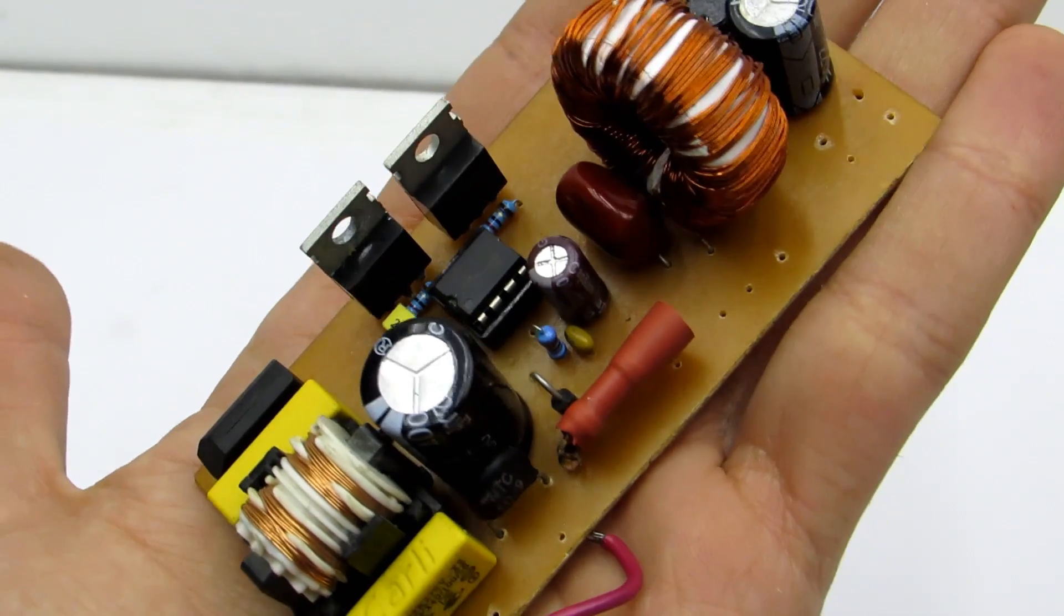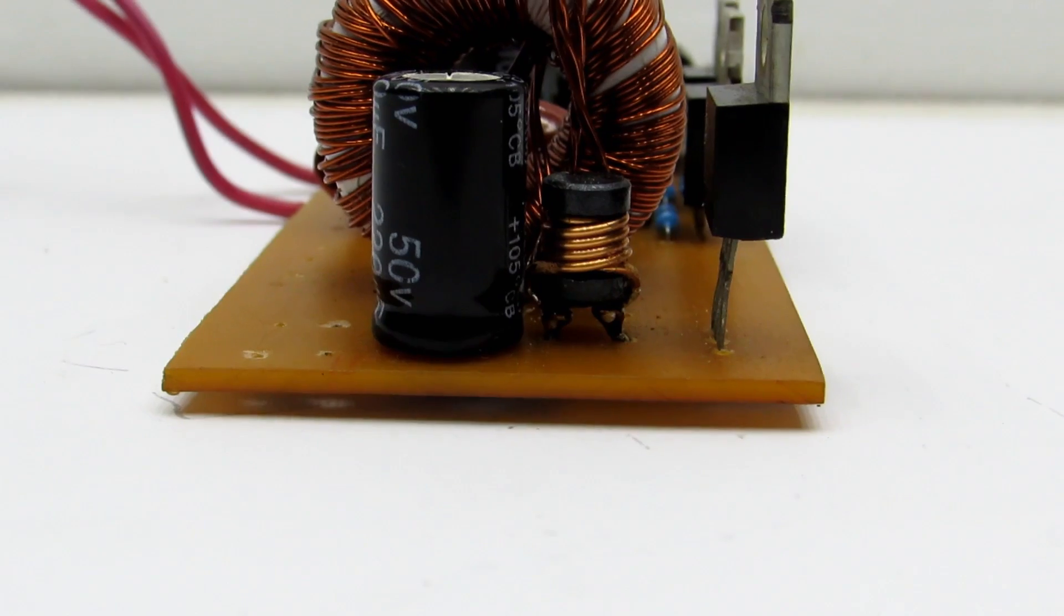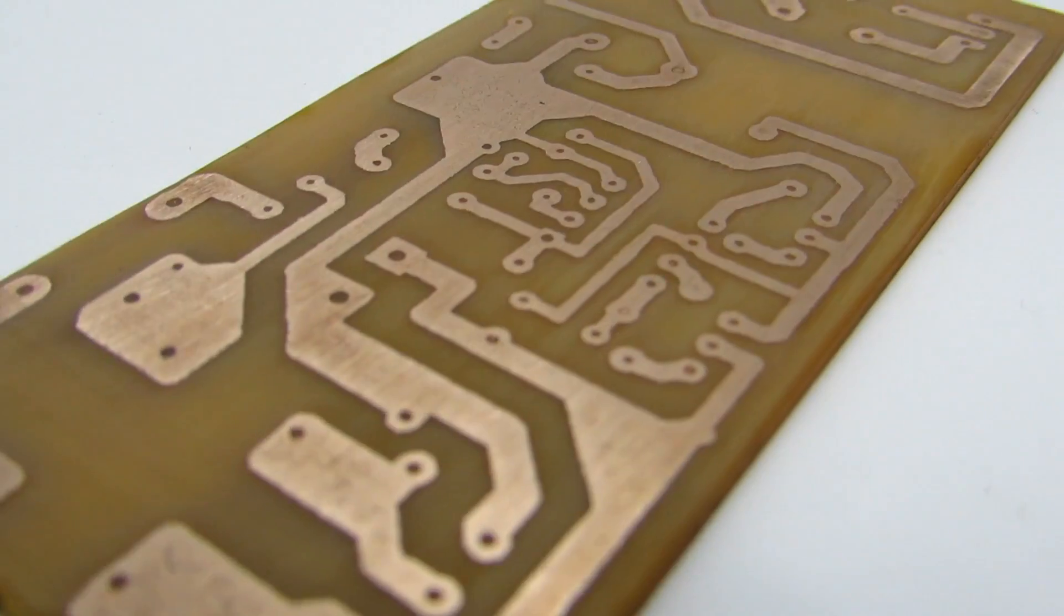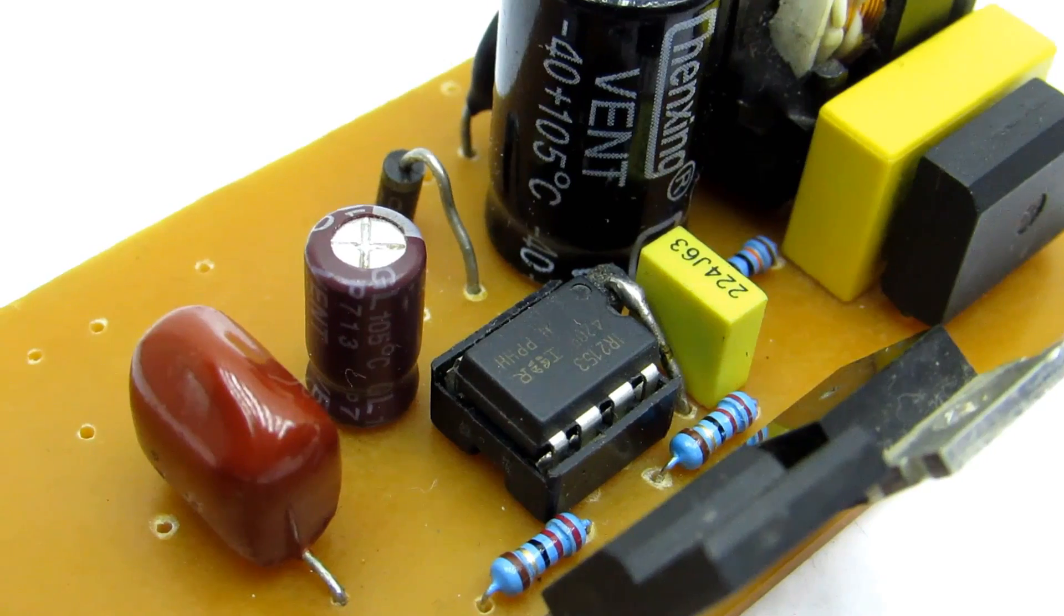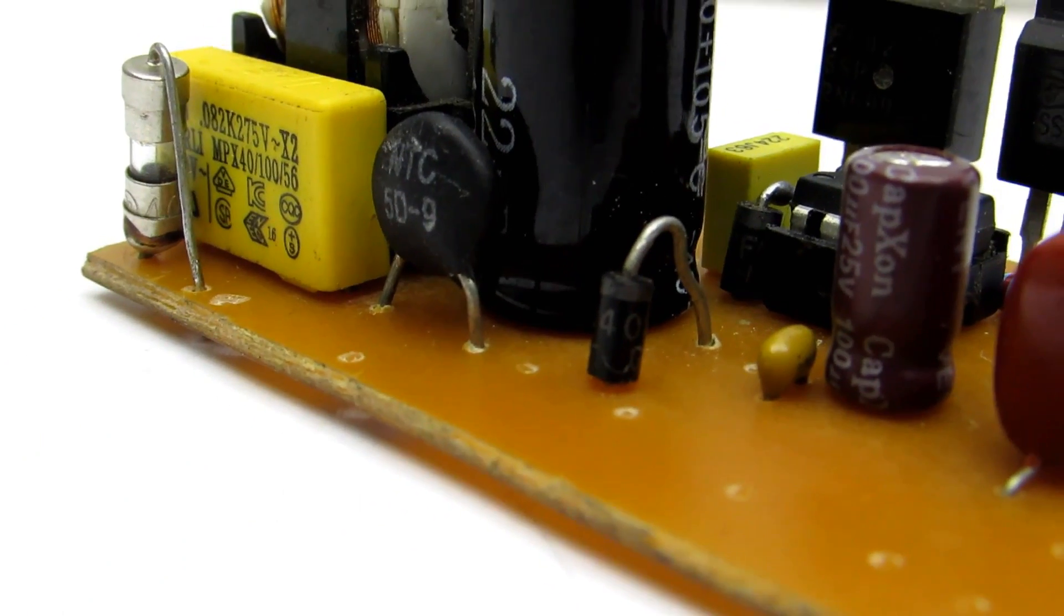It is planned to collect a small switching power supply with an output voltage of about 40 volts and a current of about 3 amperes. This is a standard half-bridge power supply based on the IR2153 chip. Such constructions are popular among beginners as their third switching mode power supply.